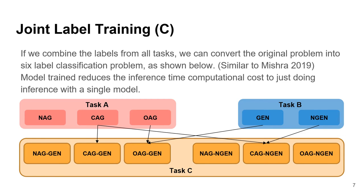Let's talk about the joint label training approach, which we refer to as subtask C. This is very similar to the approach we employed in the HASOC 2019 shared task. The main idea is that given two tasks each with a set of labels, if we combine the labels we construct a new subtask C and perform classification on it directly. If the labels of the two subtasks share certain information, this approach should yield good evaluation performance and also allows reuse of label data from two different training sets.